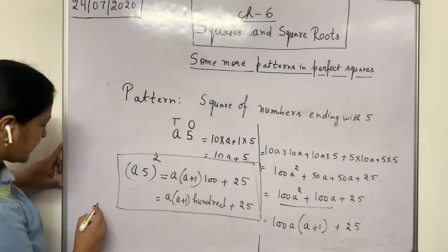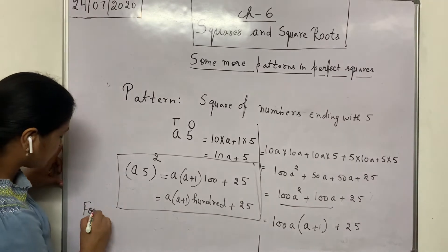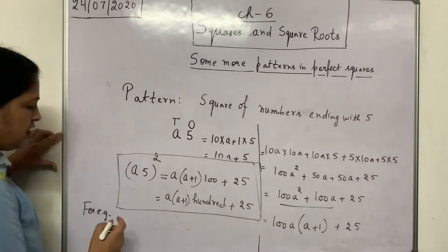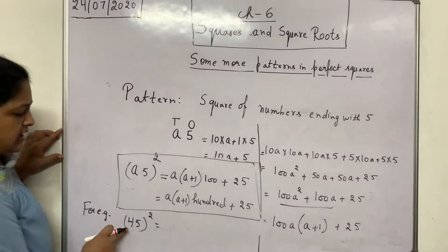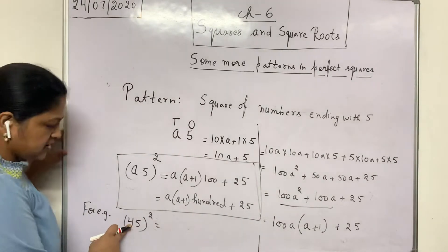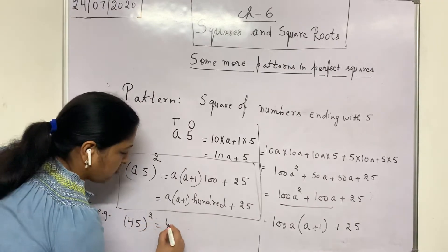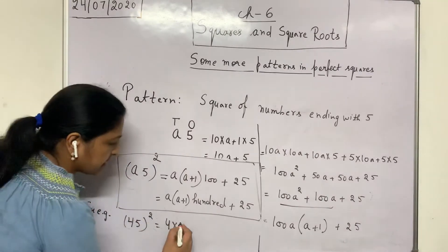Ending with 5. For example, 45 whole square. So what is a? A is 10th place digit. So here a is 4 into a plus 1, 5.